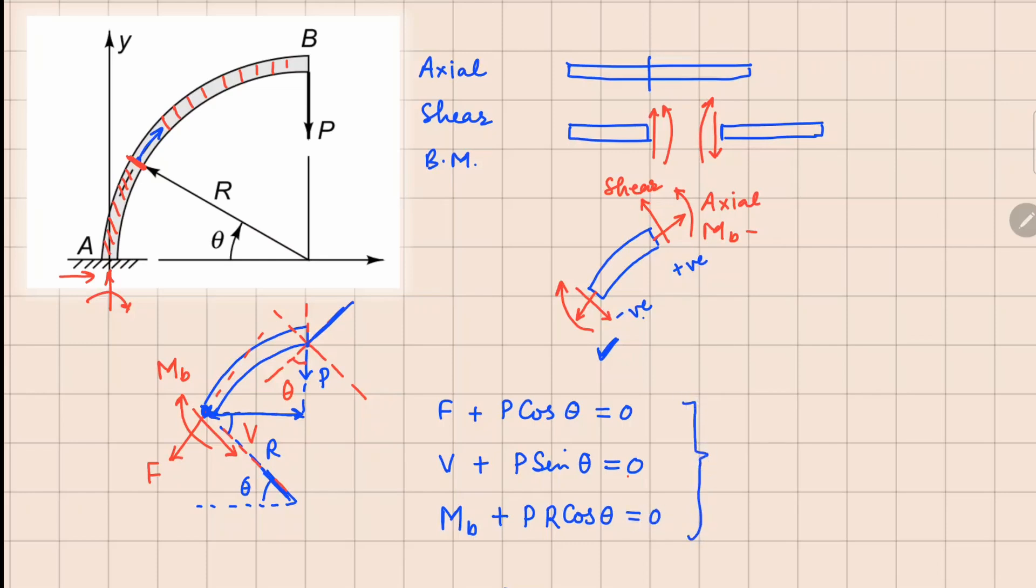So from here, we can see that your axial force F is equals to minus P cos theta, your shear force V is equals to minus P sin theta, and your bending moment M_B is equals to minus P R cos theta. So these are the answers for this problem.